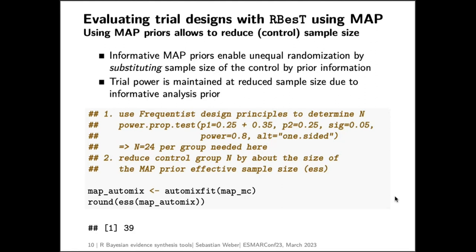Once you have this parametric prior in hand, RBesT supports you in evaluating the trial design. The informative MAP prior enables unequal randomization by substituting the sample size of the control group with prior information, so trial power is maintained at a reduced sample size in the control group. Using frequentist design principles, you can determine a starting n — for the ankylosing spondylitis example, around 24 patients per group — and then ask: how much can we reduce the control group n by using the informative prior?